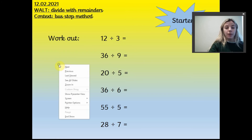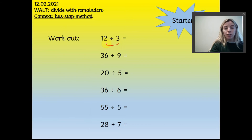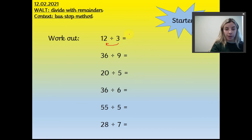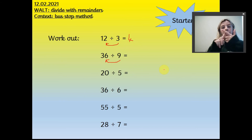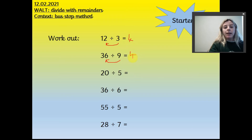If you've paused, hopefully you had a go at the starter. Let's quickly go through it together. First, how many threes go into 12? 3, 6, 9, 12 — so that's 4. Like I've said about division: if I had 12 sweets and shared them between three friends, they'd each get four. Now, how many nines go into 36? 9, 18, 27, 36 — it's 4 again. And 20 divided by 5: 5, 10, 15, 20 — again a multiple of 4.